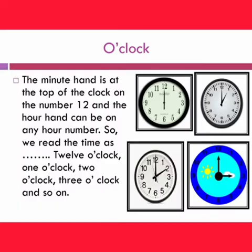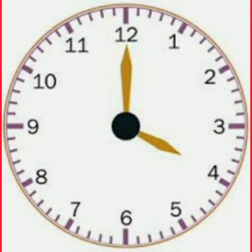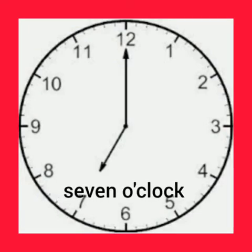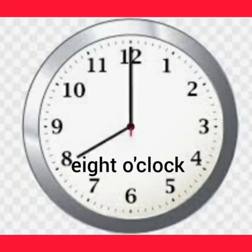O'clock. When we use the term o'clock, the minute hand is at the top of the clock on the number 12, and the hour hand can be on any hour number. So we read the time as 12 o'clock, 1 o'clock, 2 o'clock, 3 o'clock, and so on. Here, the minute hand points to number 12 and the hour hand points to number 4, so it's 4 o'clock. This clock shows the time 7 o'clock, and here it is 8 o'clock.